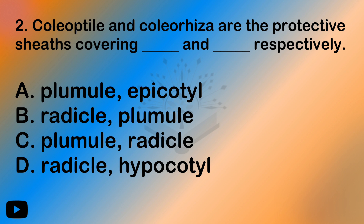Coleorhiza is the protective sheath covering the radicle. It has a root. Those are the radicle states. So coleorhiza covers the radicle, and coleoptile covers the plumule.